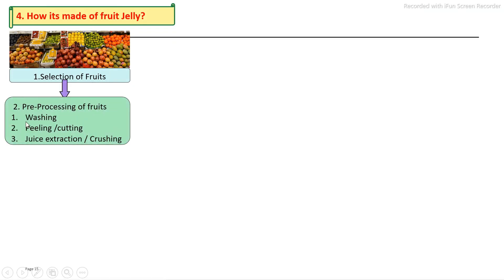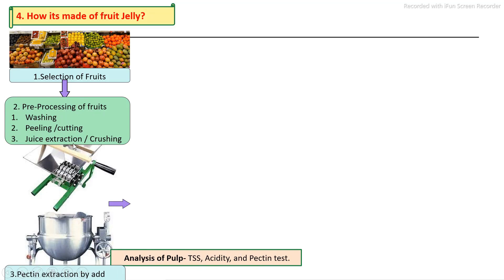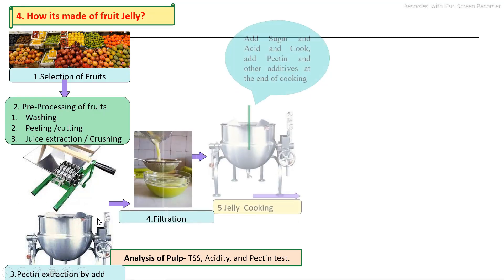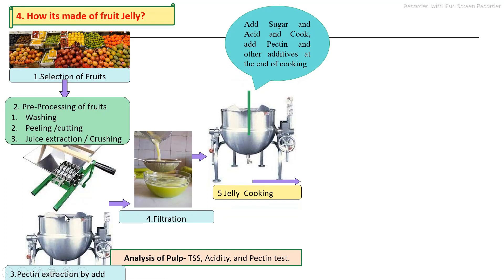Pre-processing steps include extraction, pressing, and cutting. The extracted juice undergoes further extraction by cutting, addition of water, and pectin extraction using steam-jacketed kettles. After extraction, the initial TSS, acidity, and pectin tests are carried out.